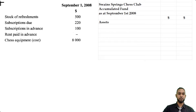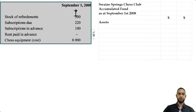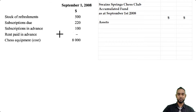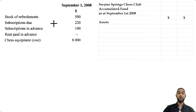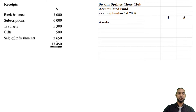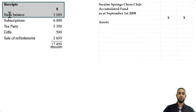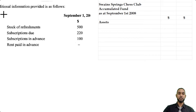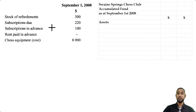Let's start with the assets using only the opening information from September 1st 2008. We have stock of refreshments, subscriptions due which is accrued revenue — an asset — subs in advance which is a liability, and chess equipment. But don't forget they also gave us the receipts and payments account, which is the bank account. There's an opening bank balance of $3,000, and that's how they used to catch many students — by separating the information and making you think only the list of balances is relevant.